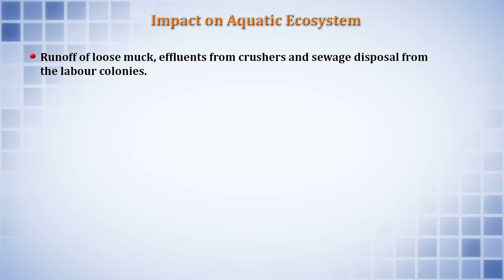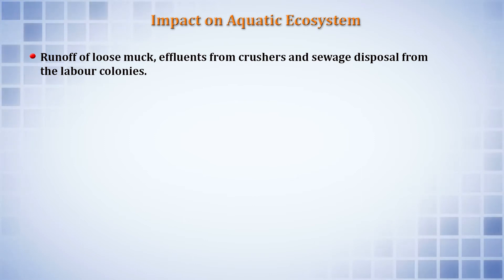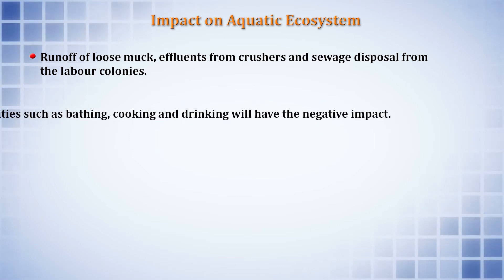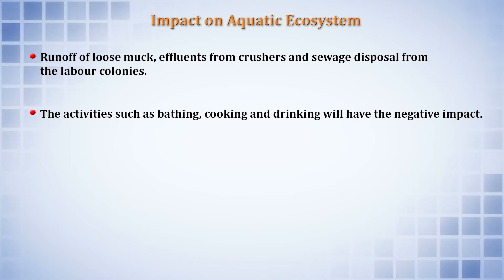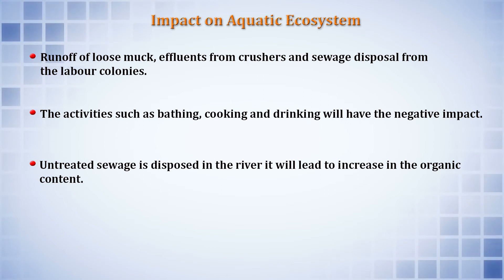Additional sources of water pollution include runoff of loose muck, effluents from crushers, and sewage disposal from labor colonies where workers make temporary camps and shelters. Activities such as bathing, cooking, and drinking by the workforce can also have negative impacts. Untreated sewage disposed into the river will lead to an increase in the organic content of the river.